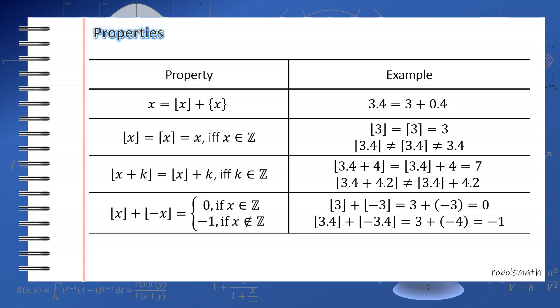So for some interesting properties, as again by definition, x is equal to the sum of the floor and the fractional part. So for example, 3.4 is equal to 3 plus 0.4. So it's like you round down, this is the floor, and then the fractional part, that's the 0.4.